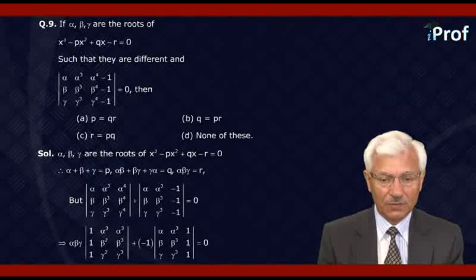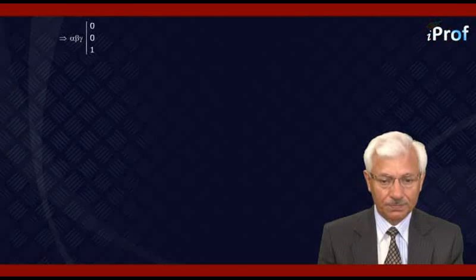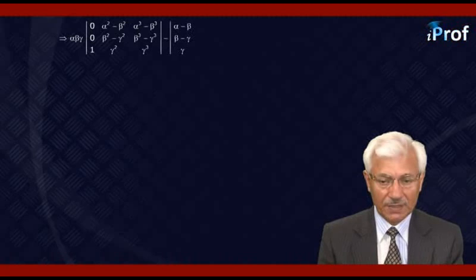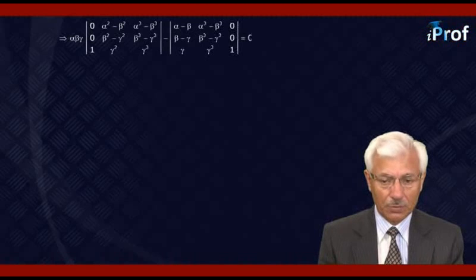From the first determinant, we operate R1 → R1 - R2 and R2 → R2 - R3. We get αβγ times the determinant with rows (0, α²-β², α³-β³), (0, β²-γ², β³-γ³), (1, γ², γ³). Then applying R1 → R1 - R2 and R2 → R2 - R3 again on the second determinant, we get rows (α-β, α³-β³, 0), (β-γ, β³-γ³, 0), (γ, γ³, 1) equals 0.